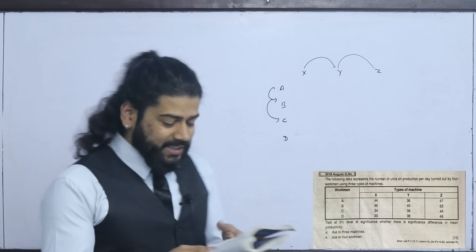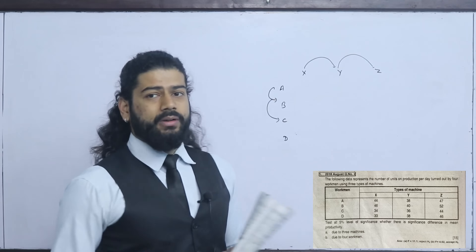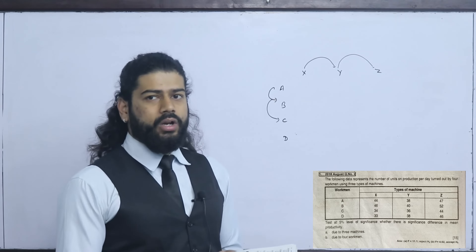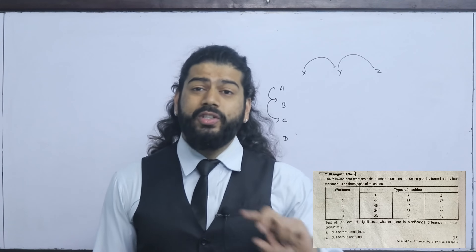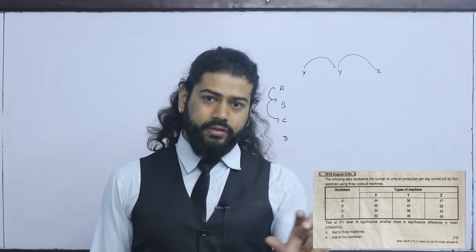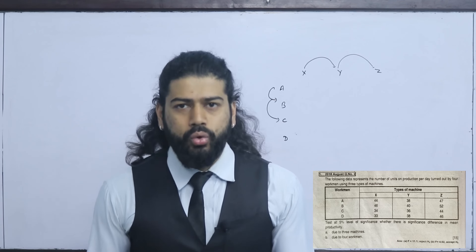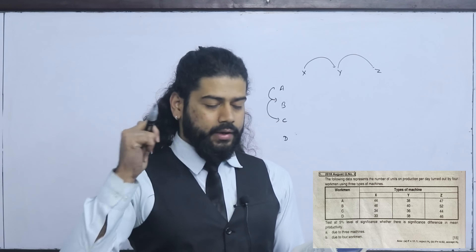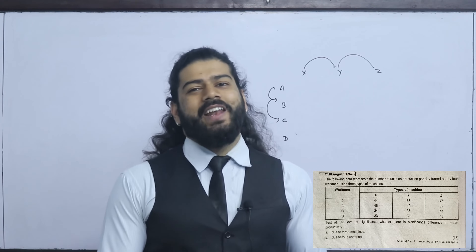This is two-way. The column is due to three machines, and we have the column one-way for machines. The row is due to four workmen, and that is one-way for workmen. So together we have two-way ANOVA. Column change is the type of machine change. Row change is the workman change. This is different from one-way.